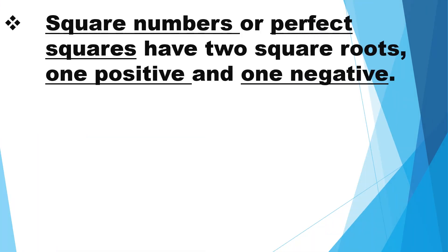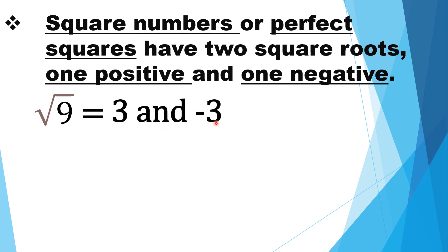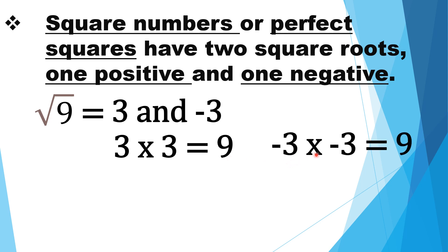Let us have a review. Square numbers or perfect squares have two square roots — one positive and one negative. What are the square roots of nine? The square roots of nine are positive three and negative three. Since positive three times positive three is equal to positive nine, and negative three times negative three is equal to positive nine. Thus, the square roots of nine are positive three and negative three.